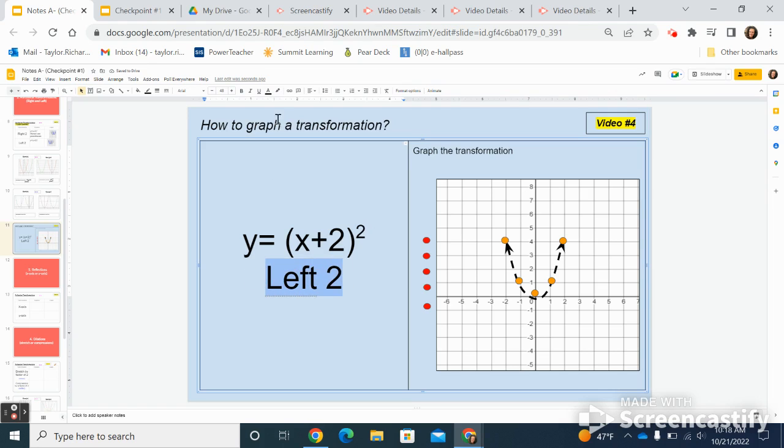And I'm also going to highlight this because this is what I'm going to be, I'm using the red points to show it. Just like before, I'm going to start with my orange points, which is my parent function. And from every orange point, I'm going to count left two and put a red point.